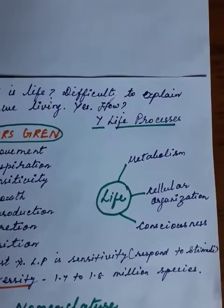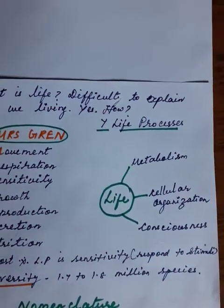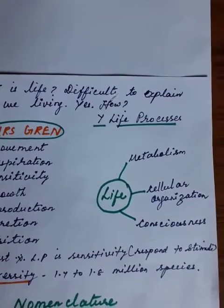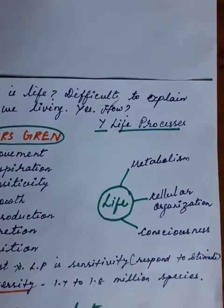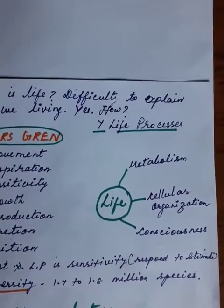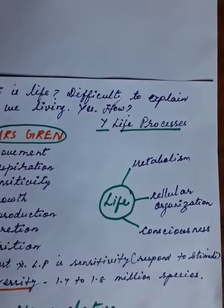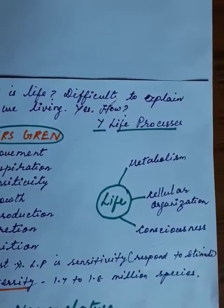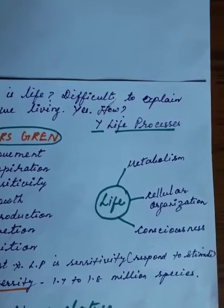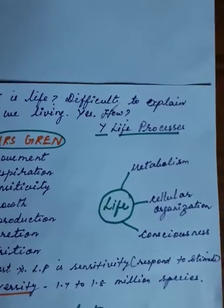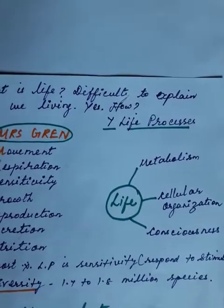Another point is cellular organization. Living organisms are made up of cells. Cells combine together to form tissues. A single tissue or more than one type of tissue forms organs. Many organs together form an organ system. The human body consists of many systems: circulatory system, respiratory system, excretory system, and reproductive system.